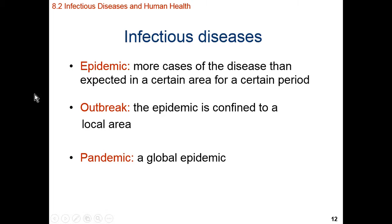Now, if that epidemic is localized, we refer to that as an outbreak — relegated to a state within the United States, for example. But if we start to have it spread to multiple countries, or more specifically, multiple continents, it goes from an outbreak to a pandemic, 'pan' being a root word that refers to the globe.